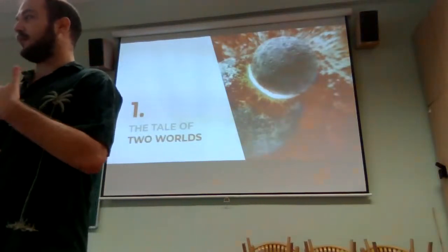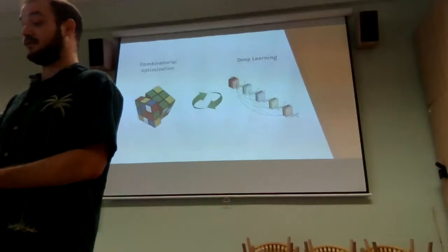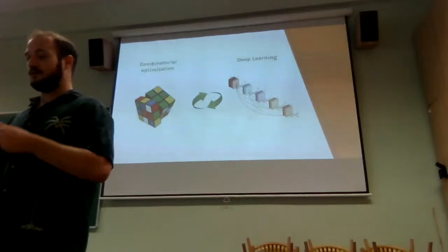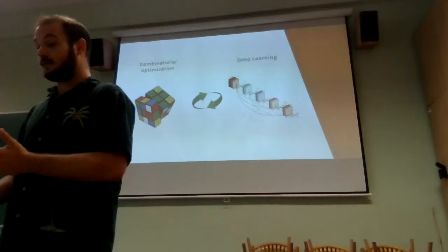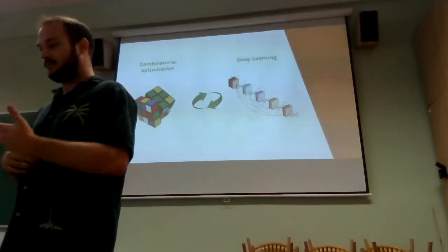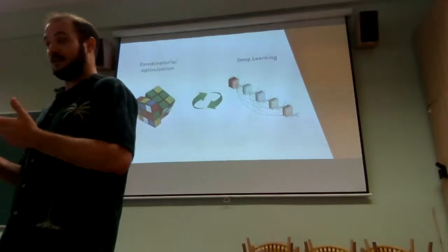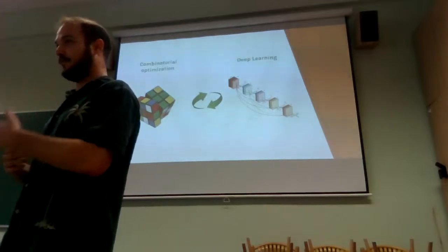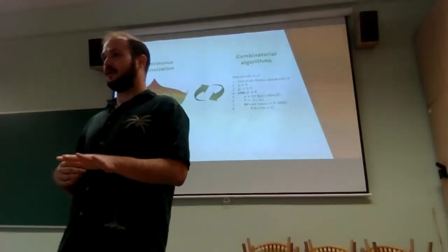I'll start with some ideological motivation about what could be a generally interesting area for next-generation machine learning and AI. This is also a personal story, because I did my PhD in Vienna under Vladimir Kolmogorov, who was a big champion of discrete optimization in computer vision. Together we did a lot of theory — we did not do vision. Then I switched for a postdoc to Max Planck, where I did pure deep learning for the first two years, and initially I did not see that there could be a connection.